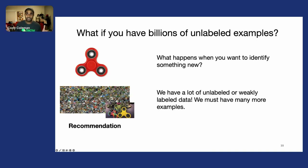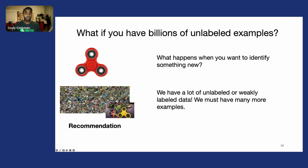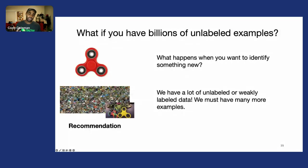This might come up if we're a social media site trying to do recommendation. Imagine something new happens—in 2015, fidget spinners were all the rage. You're in luck because you have a lot of unlabeled or weakly labeled data, so there must be many more examples to pull from to create a robust classifier.